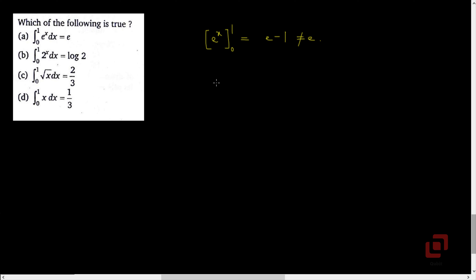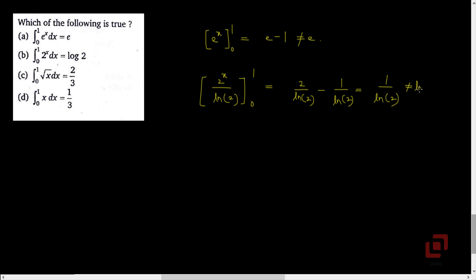Let's go to B. The integral of 2^x will be 2^x upon log 2, with limits 0 and 1. Substituting x as 1 gives 2 upon log 2, minus 2^0 which is 1 upon log 2, so we get 1 upon log 2, which is not equal to 2. So B is also not true. Let's go to D: the integral of x is x squared by 2, with limits 0 and 1, which clearly gives 1/2, not equal to 1/3 as stated in the option. Therefore the answers in A, C, and D are wrong, so the correct option must be C.